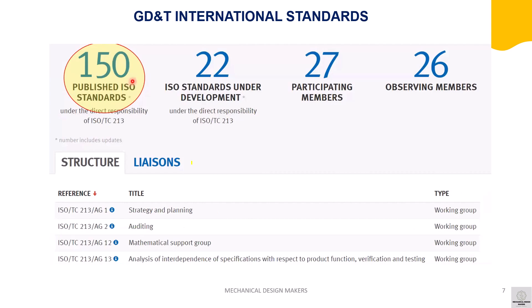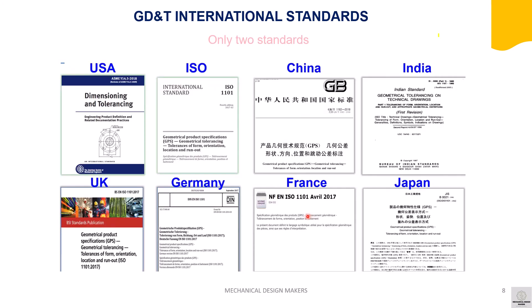There are 150 ISO standards published under the direct responsibility of ISO Technical Committee 213. When we talk about ISO GPS standards, ISO 1101 is widely used in European and Asia-Pacific countries. This standard is mainly used to define all geometrical tolerances — form, orientation, location, and run out.